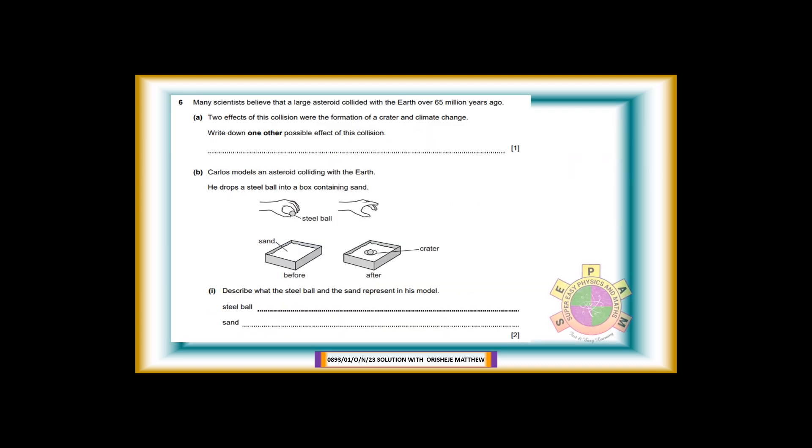Question 6. Many scientists believe that a large asteroid collided with the Earth over 65 million years ago. 6a: Two effects of this collision were the formation of a crater and climate change. Write down one other possible effect of this collision. For 1 mark. Answer: Mass extinction, fires, dust clouds, airborne debris, sunlight being unable to penetrate to surface, shock waves, seismic shaking, earthquakes, tsunami, heat radiation, wind blasts, acid rain, decrease in photosynthesis, etc.